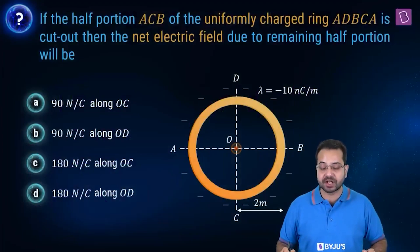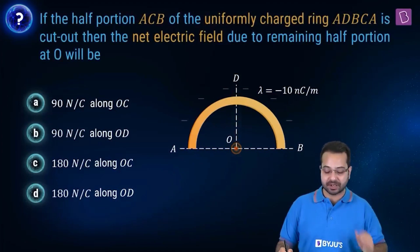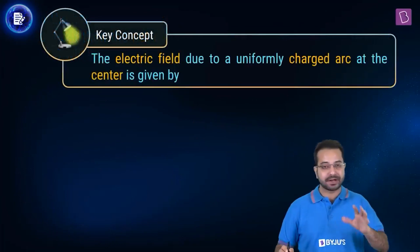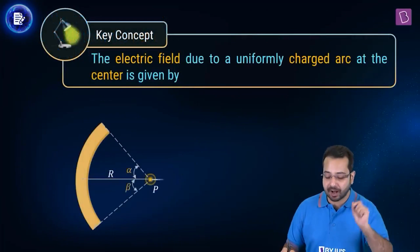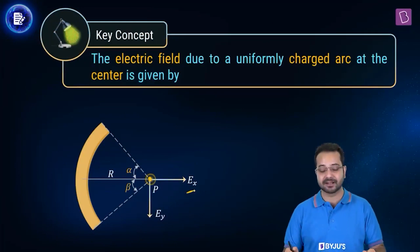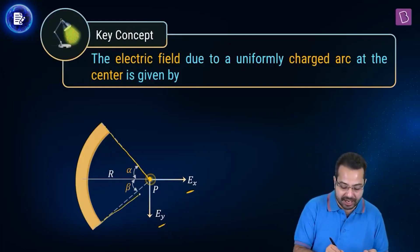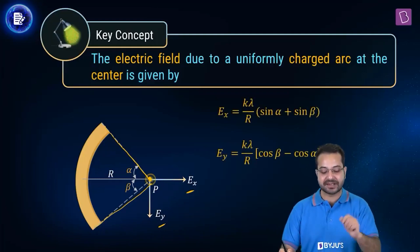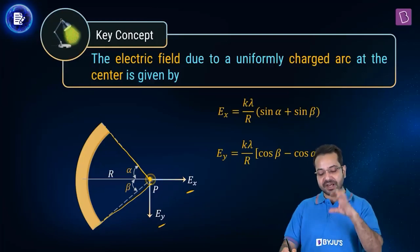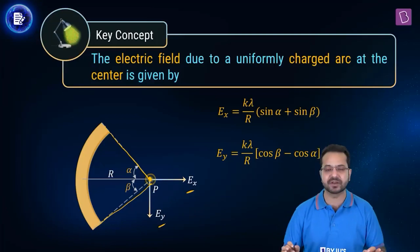If the half portion ACB of the uniformly charged ring ADBCA is cut out, what is the net electric field due to the remaining half portion at O? There was a complete ring but half has been cut off, and we want the electric field at center O including its direction. The key concept is the electric field due to a uniformly charged arc at its center, which has components EX = Kλ/R × (sin α + sin β) and EY = Kλ/R × (cos β − cos α).